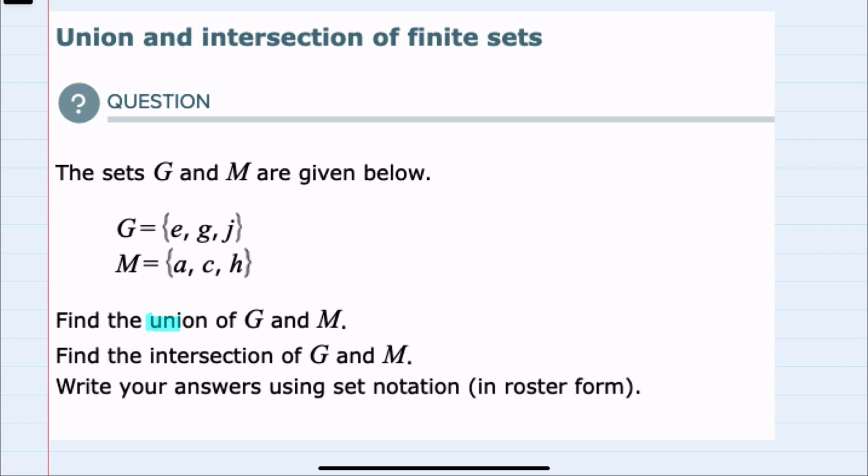We're asked first to find the union of G and M. To do so, we recall that the union will bring all of the elements represented together. So it would be any element that is in either G or M.